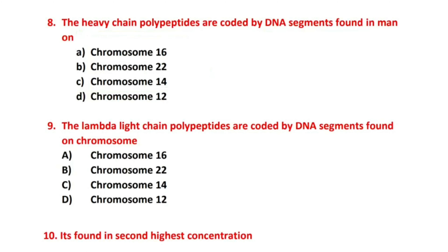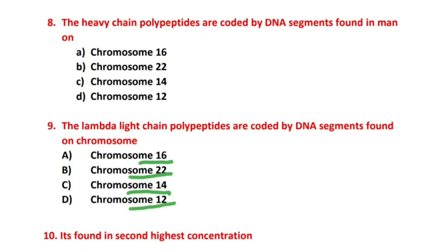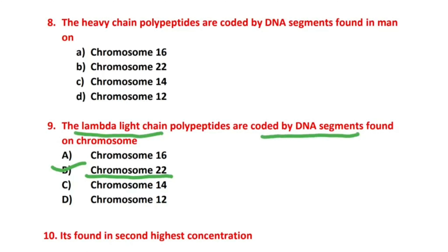Question number 9: The lambda light chain polypeptides are coded by DNA segments found on which chromosome in humans? Options: chromosome 16, 22, 14, or 12. The correct answer is B, chromosome number 22. The lambda light chain is coded by DNA on chromosome 22.